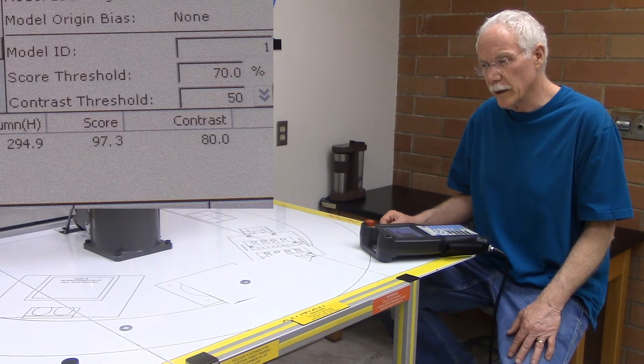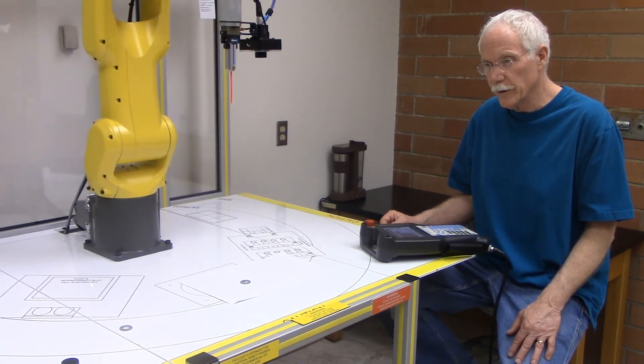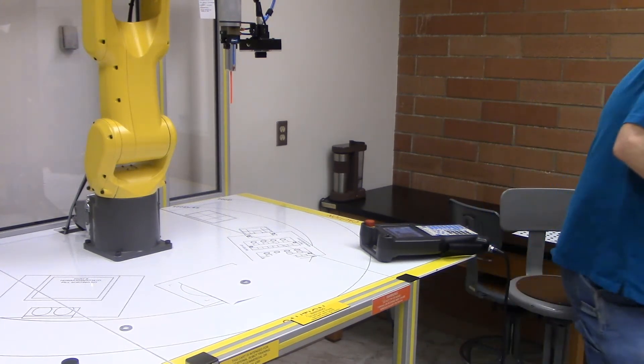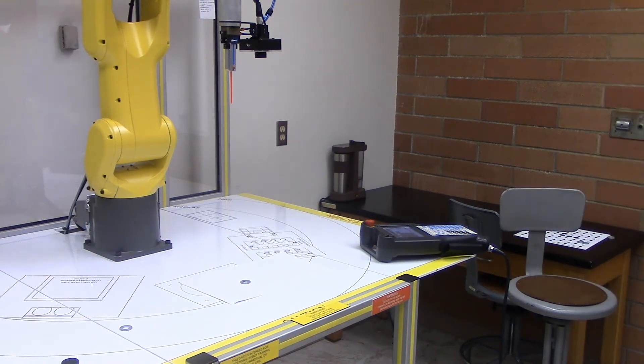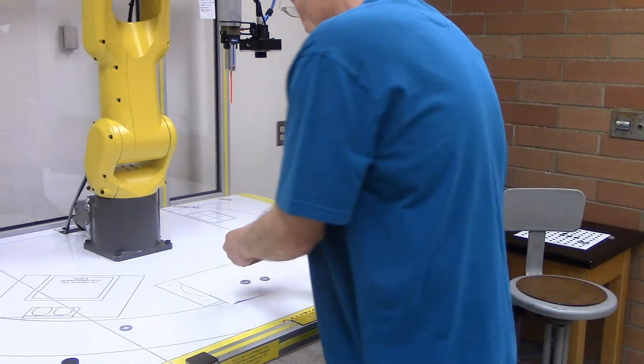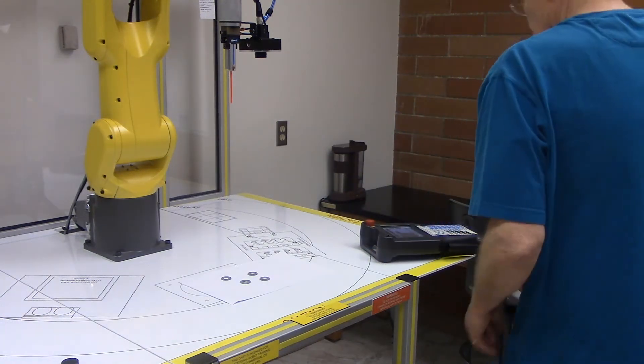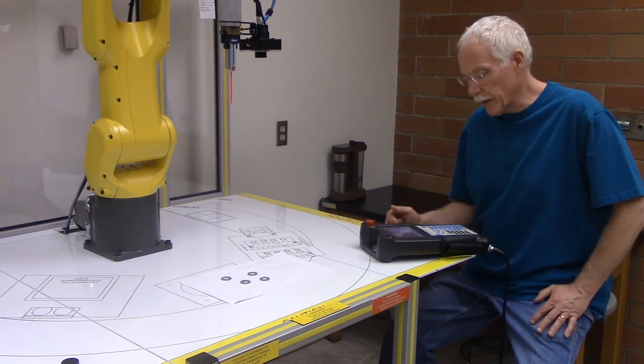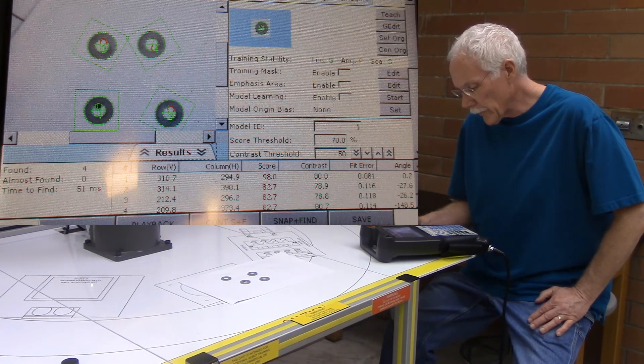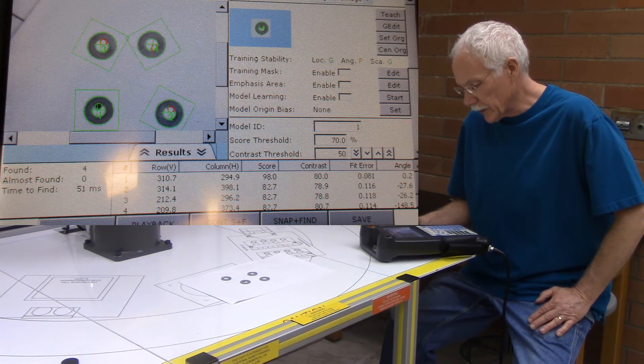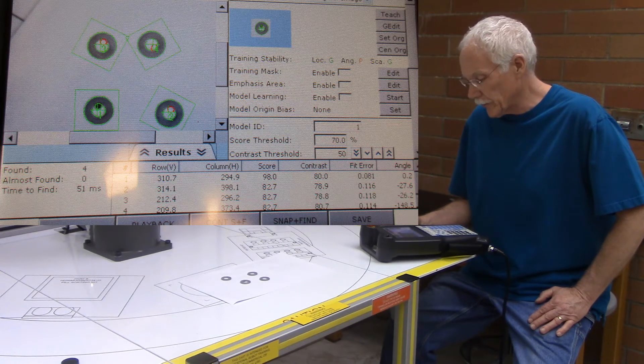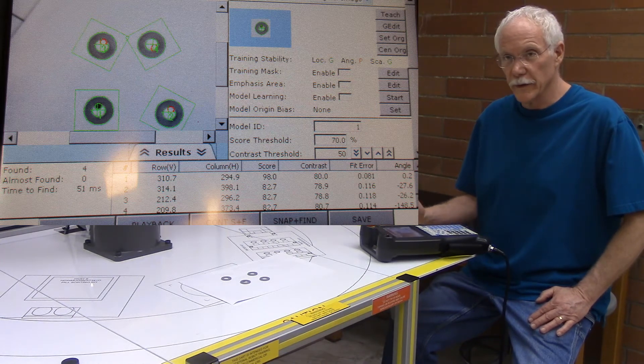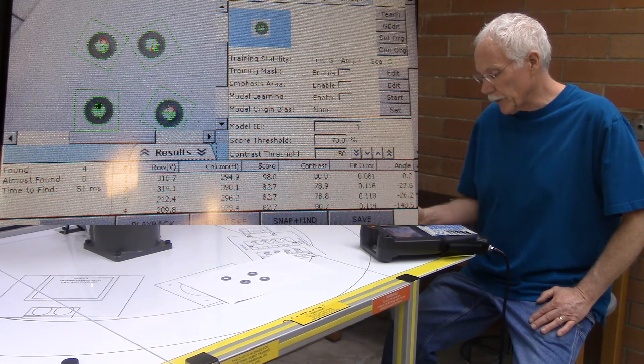If I needed it to look a little more closely than that, I'd have to change that threshold. So for instance, if I take some other washers and I set them on this table here, and then I select snap and find again, it's looking and it found four instances of washers that were the same as the object that was taught.